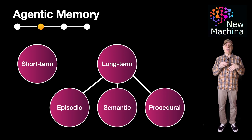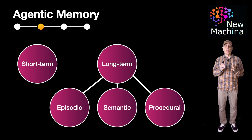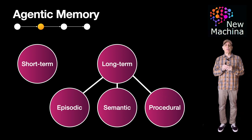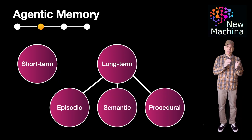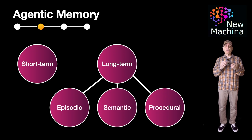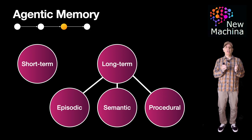Episodic memory stores specific events. Semantic memory holds general knowledge, and procedural memory retains skills and procedures. Essentially, these memory types allow systems to store a wide range of information from facts to experiences and skills. So how is episodic memory implemented? Well, episodic memory is implemented by storing detailed records of specific events, often using time-stamped data entries. This allows a system to recall past interactions and experiences, providing context for future decisions. In layman terms, episodic memory is like a diary where events are recorded and can be revisited when needed.